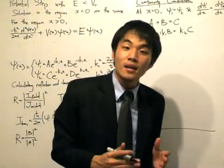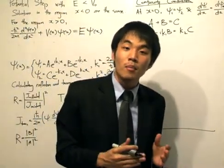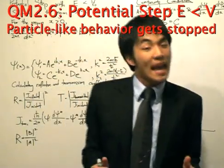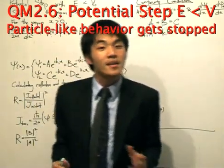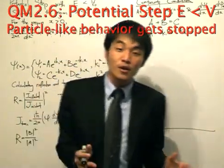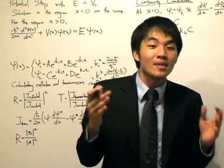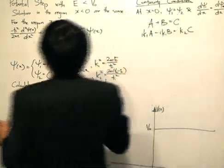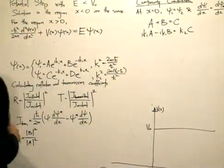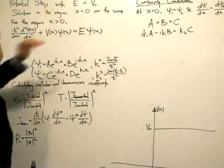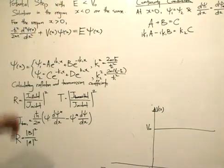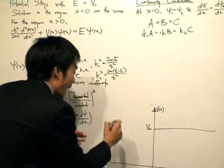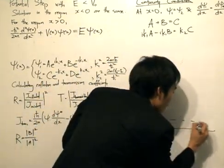Following directly from our previous problem of the potential step, we'll now consider the case when the energy of the particle is below the potential V0. We'll solve the Schrödinger equation and see what wave solutions we get. In our previous video, we talked about the energy being above the potential V0.